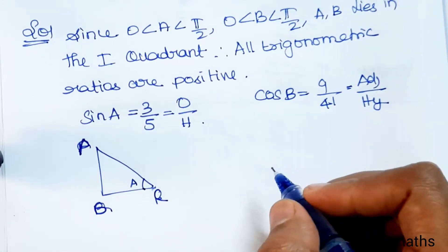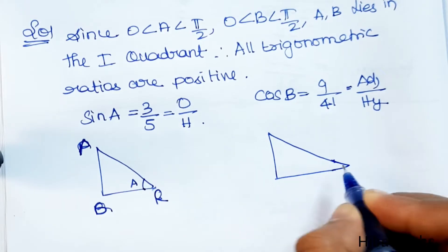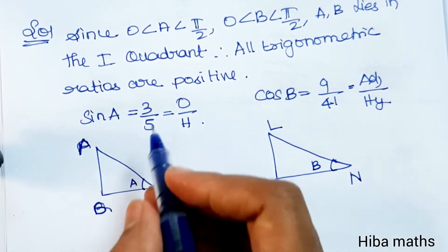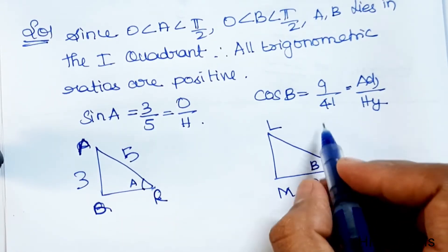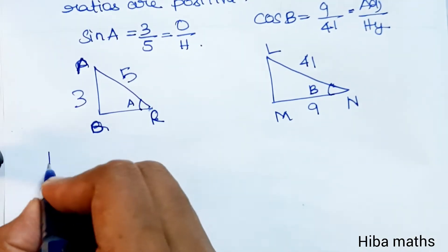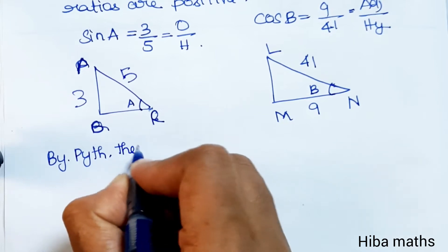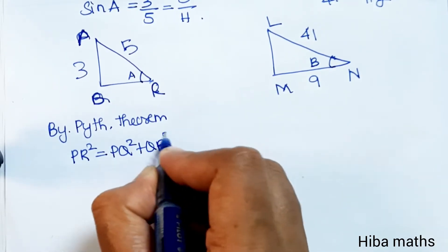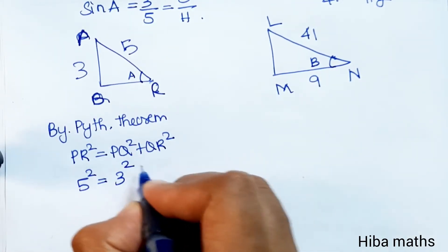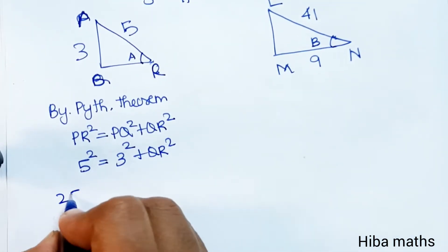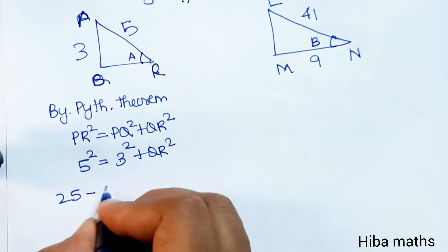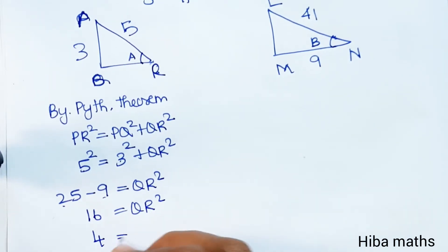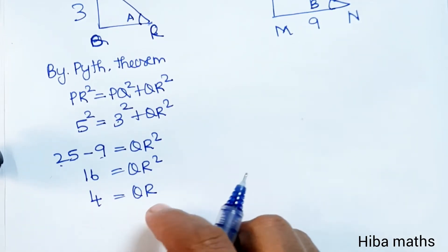For triangle PQR with angle theta equal to A: opposite side is 3 and hypotenuse is 5. By Pythagoras theorem, PR squared equals PQ squared plus QR squared. So 5 squared equals 3 squared plus QR squared. 25 minus 9 equals QR squared. 16 equals QR squared. Therefore QR equals 4.